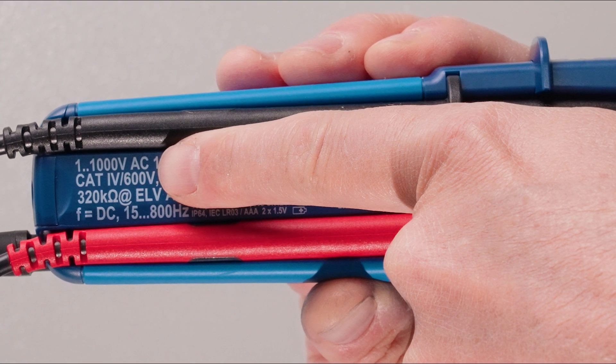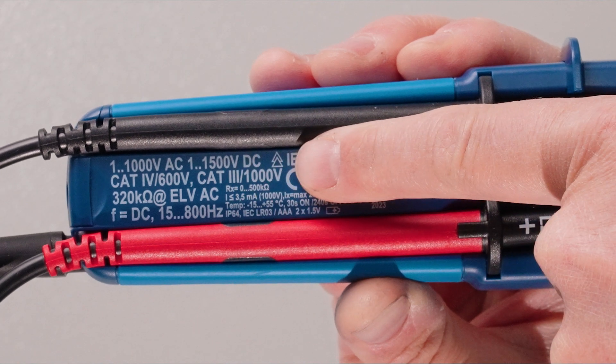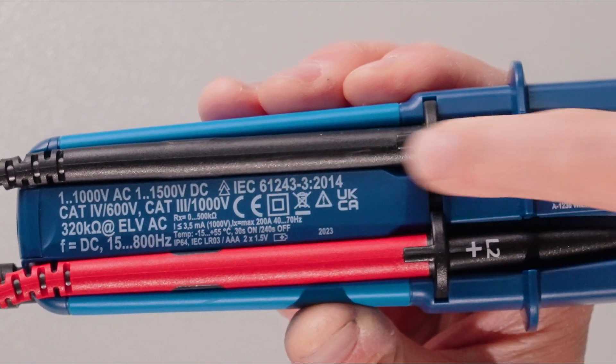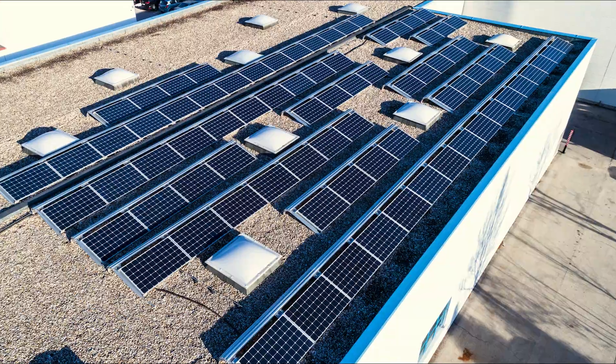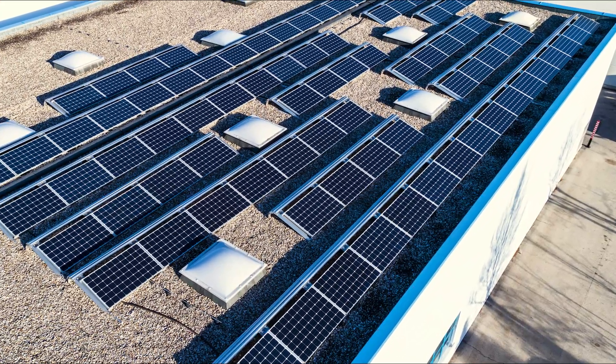Pan Allrounder measures AC voltage up to 1000 V and DC voltage up to 1500 V and is therefore ideal for measurements in photovoltaic applications.